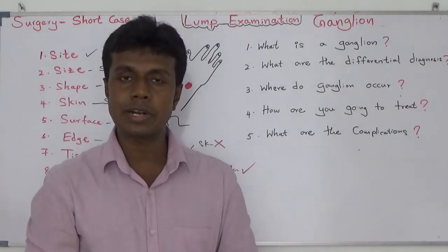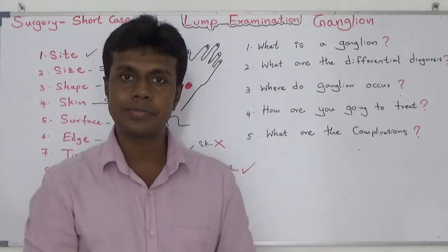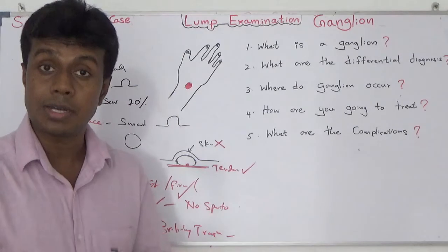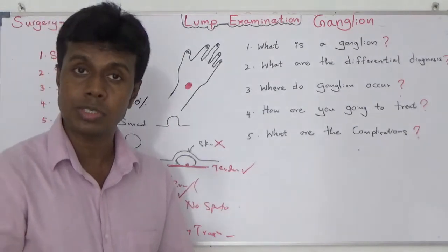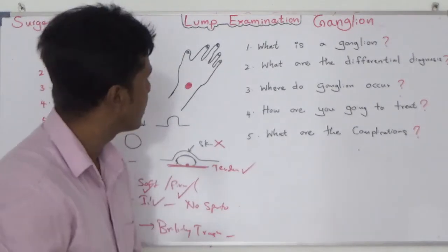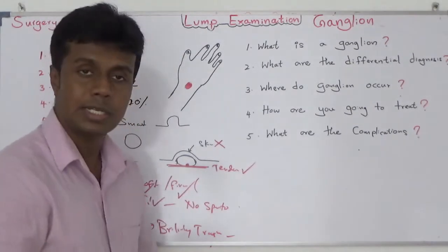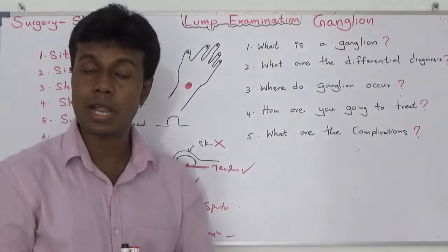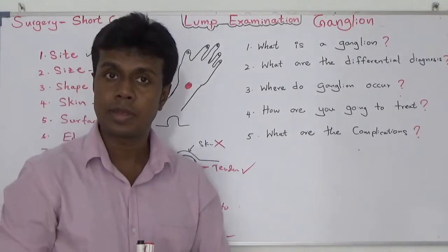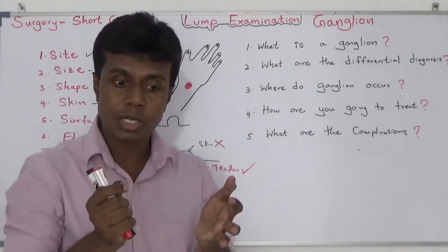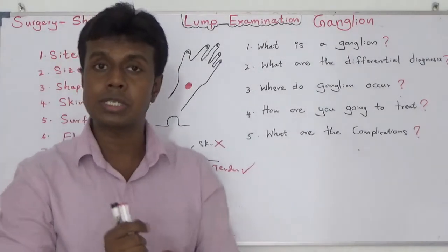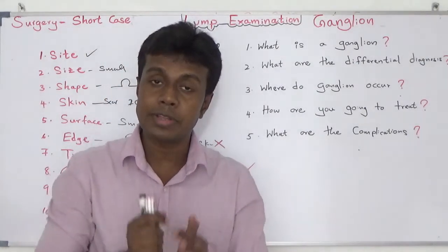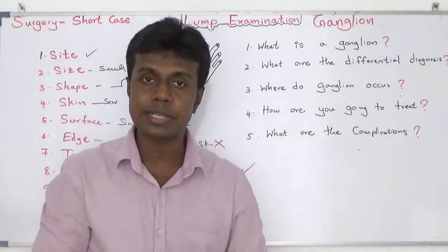Most probably under general anesthesia. The examiner will then ask: what is a ganglion? A ganglion is an accumulation of myxomatous degenerative material within the tendon sheath, which gives rise to formation of the ganglion.